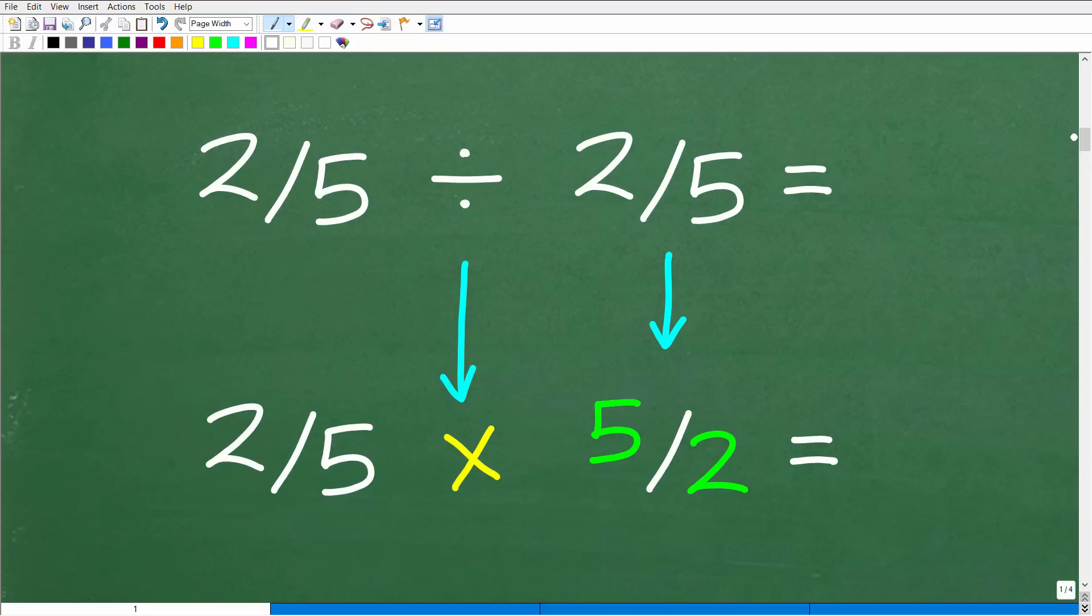All right, so here we have 2 fifths divided by 2 fifths. When we are dealing with fractions and we have division, we never really divide fractions. Well, of course, the result is what we're going to be doing is actual division of fractions. But what the operation that we are going to be doing is actually multiplication. So we're going to take division problems and turn them into multiplication problems.